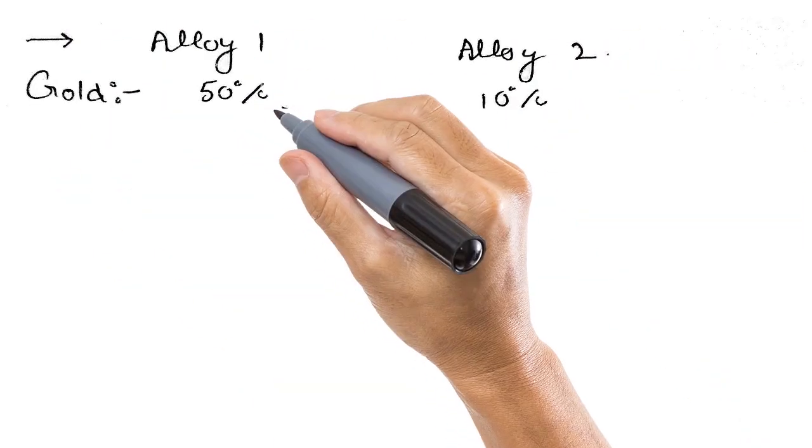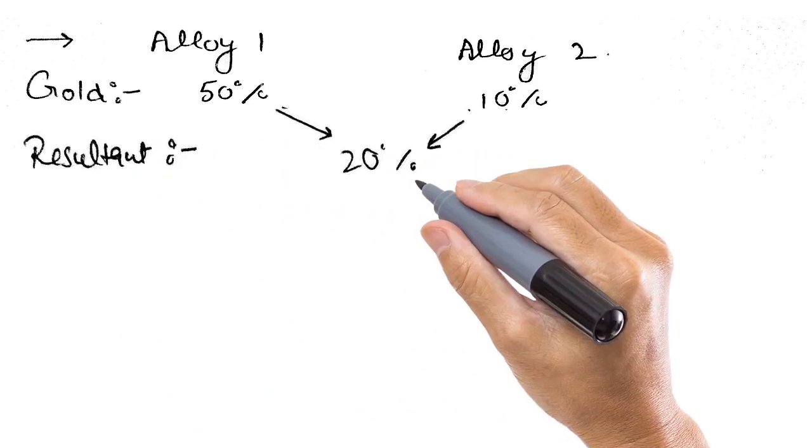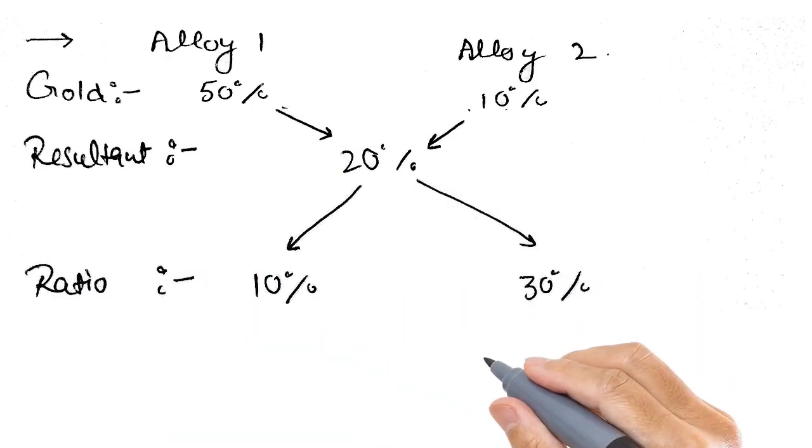We write on top alloy 1 and alloy 2. Then the gold percentage: 50% in alloy 1 and 10% in alloy 2, and the resultant we want is 20%. So we solve it in a cross. 50 minus 20 would be 30% and 20 minus 10 would be 10%.